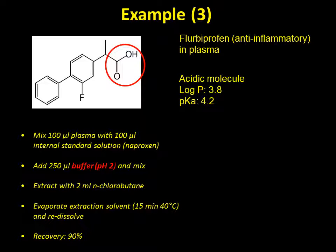Another example is the anti-inflammatory drug flurbiprofen — an acidic molecule with a log P of 3.8 and a pKa of 4.2. 100 µL of plasma is mixed with 100 µL of naproxen internal standard solution. Note that a deuterated internal standard is not used here, as detection is not based on mass spectrometry. To extract the molecule, pH is adjusted to pH 2 and extraction is performed into 2 mL of N-chlorobutane. The organic solvent is evaporated over 15 minutes at 40°C and the analyte re-dissolved. Overall recovery is 90%.